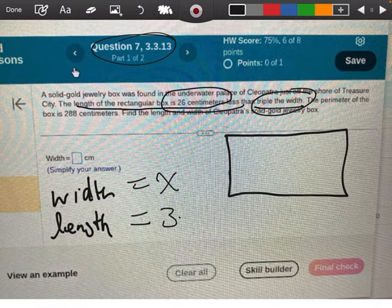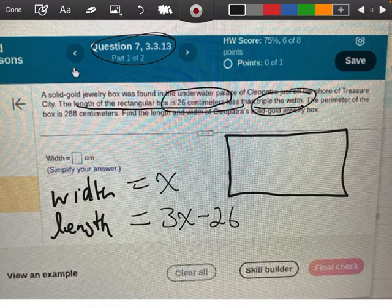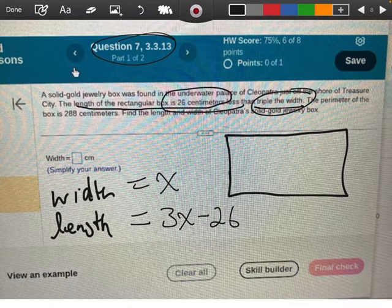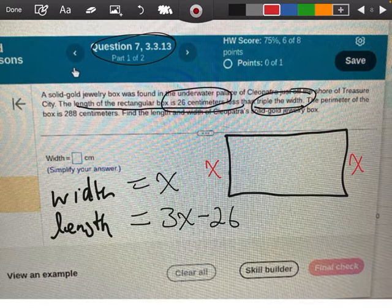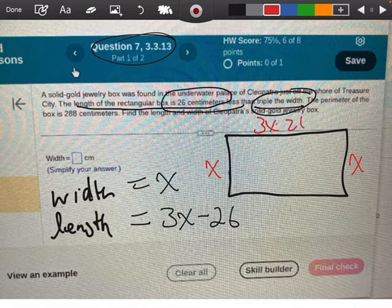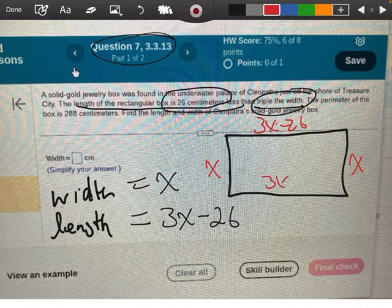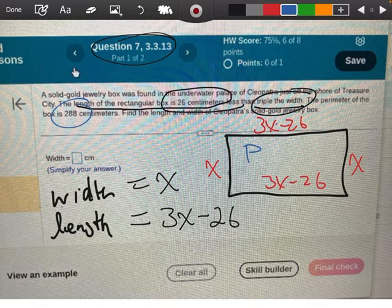Now, triple the width would be 3x, and then 26 centimeters less would be minus 26. So if I draw on my rectangle, I could say that side is x, and that side is x, and that's 3x minus 26, and right here is also 3x minus 26. We also know that the perimeter is 288.